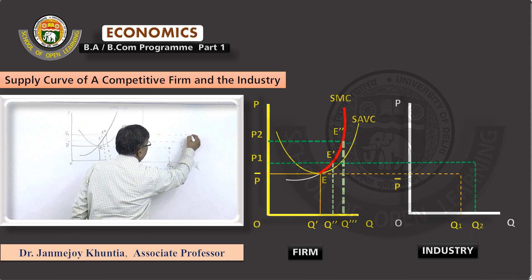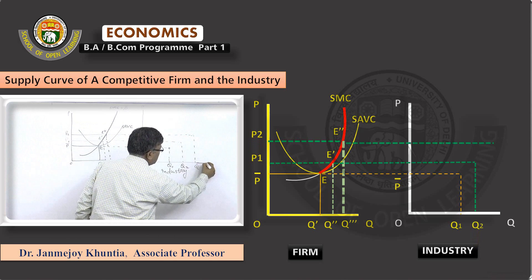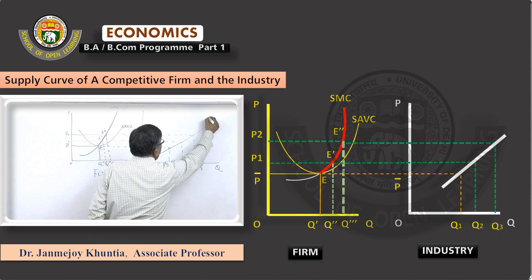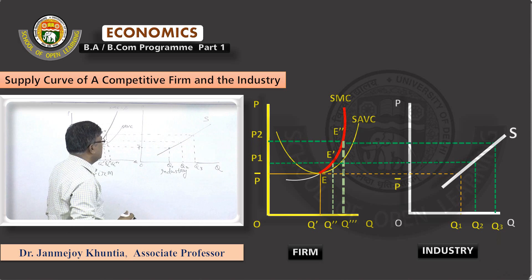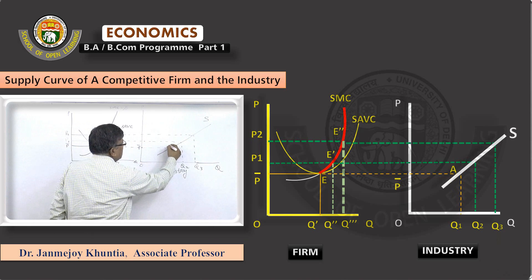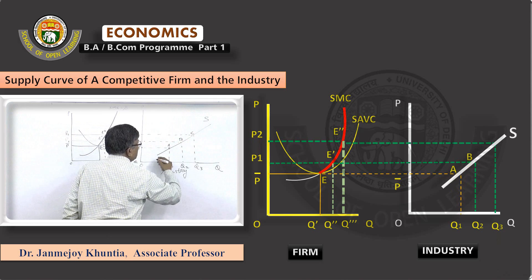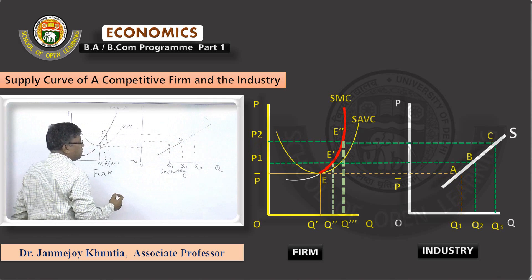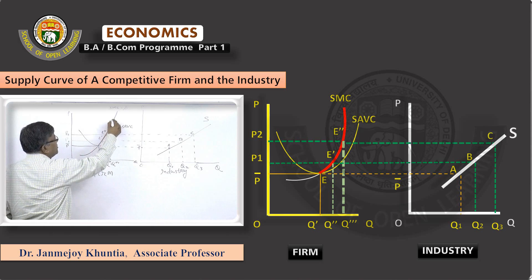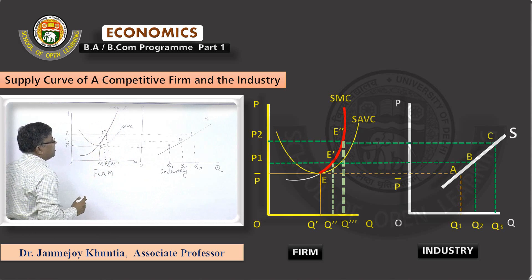As and when the price increases, the industry supply will go up. These are horizontal summations. Join all these points to get the industry supply, which is more elastic as it is the horizontal summation of the firm's supply. The locus of points A, B, C is the industry supply. The locus E, E-dash, E-double-dash — which is the upward portion of the marginal cost curve above the minimum point of short-run average variable cost — is the firm's supply curve.